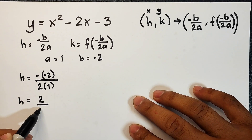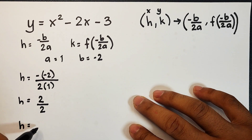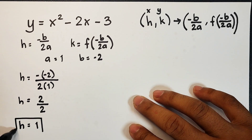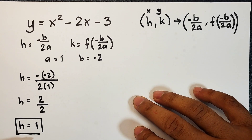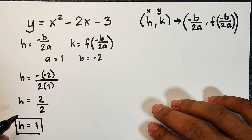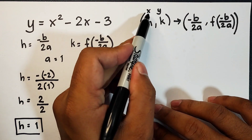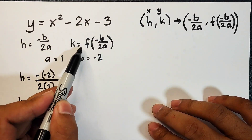Let us simplify: negative times negative is positive, so this is 2 over 2 times 1, which is equal to 2 over 2, and the value of h is 1. Now let's move on and find the value of k. Remember that h is also equal to x.